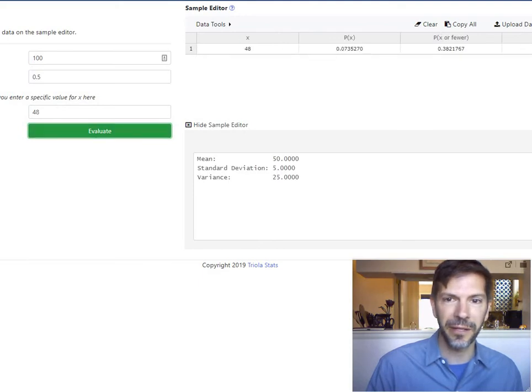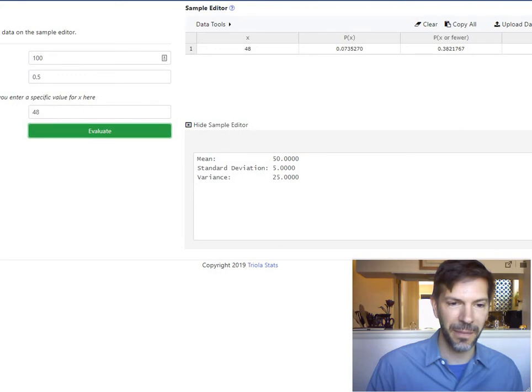And about 38% of the time when you flip a coin 100 times, you'll get something like this, something that's 48 heads or less. So 38%, again, doesn't seem that unlikely. Seems like that could have happened by chance pretty easily.